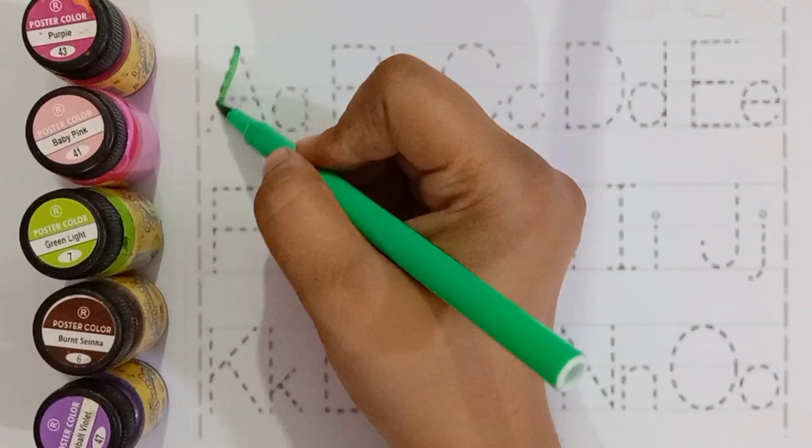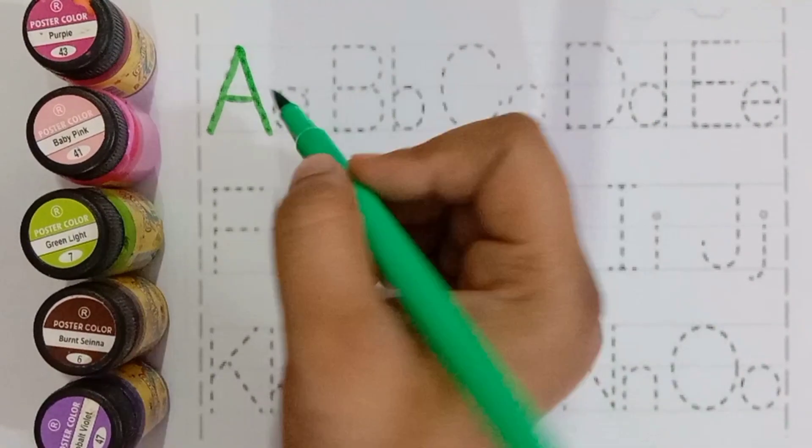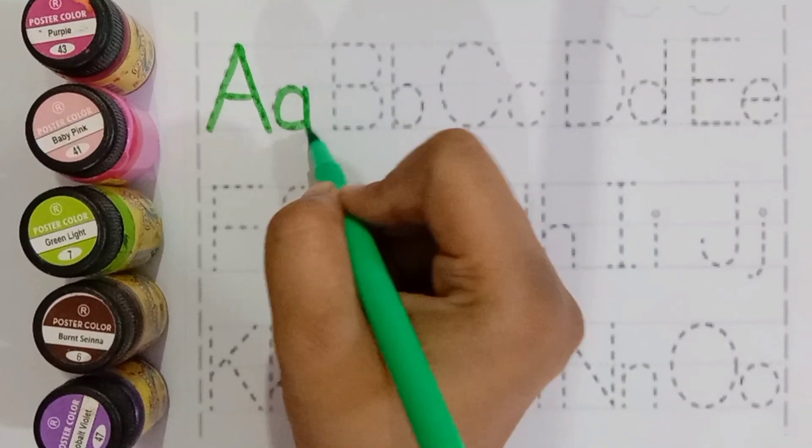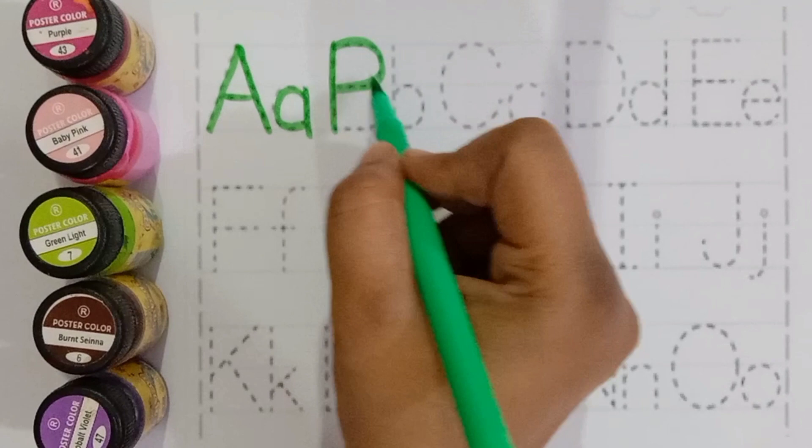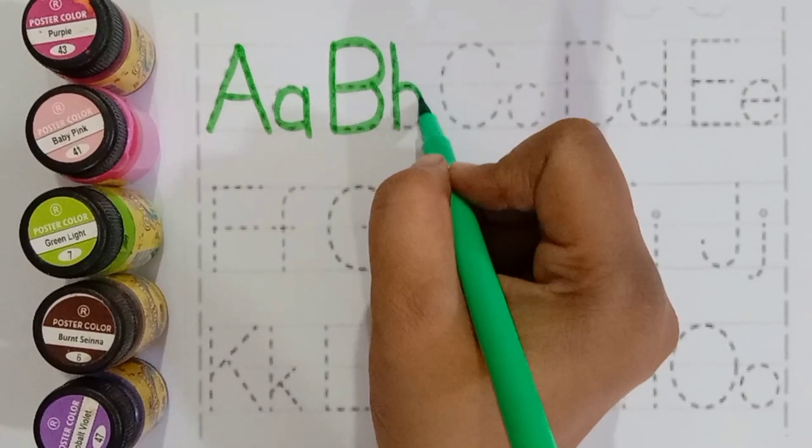A. A for apple, A for ant. B for banana, B for balloon.